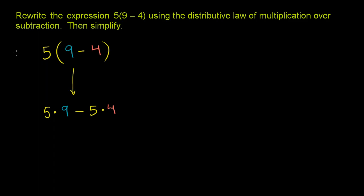Notice, we distributed the 5. We multiply it times both the 9 and the 4. And in the first distributive property video, we gave you an idea of why you have to distribute the 5. Why it makes sense. Why you don't just multiply it by the 9. And we're going to verify that it gives us the same answer as if we just evaluated the 9 minus 4 first.